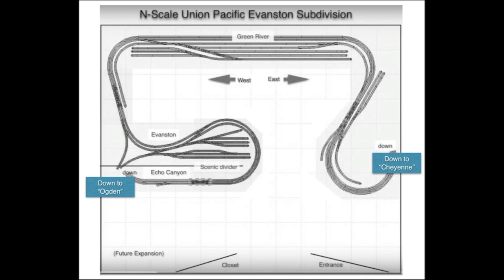Let me show you on a simple version of my track plan, which depicts the scenic portion of my layout. Trains wait in the staging yard located under Green River, then enter the scenic portion of the layout, cross the layout, and re-enter the staging yard at the opposite end. This creates the illusion that trains are going from some place to some place to serve industries located off layout — it's a sleight of hand.